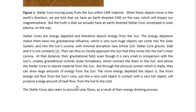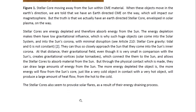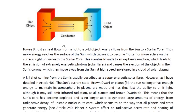But through the physical contact which is made, they can draw large amounts of energy from the sun. The more energy depleted the object is, the more energy will flow from the sun's core — just like a very cold object in contact with a very hot object will produce a large amount of heat flow from the hot to the cold. The stellar cores also seem to provoke solar flares as a result of the energy draining process. This diagram illustrates the energy flow that occurs between the sun and the stellar core, because just as heat flows from a hot to a cold object, energy flows from the sun to a stellar core.